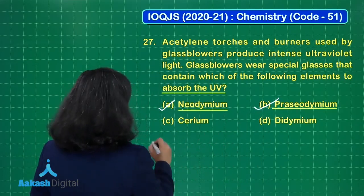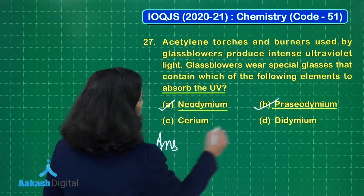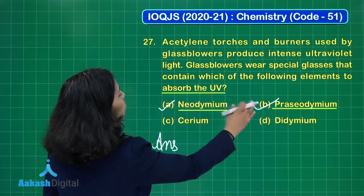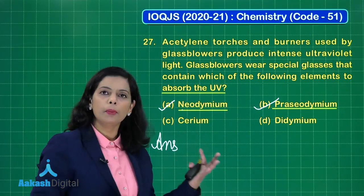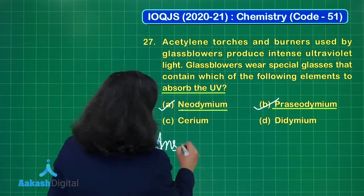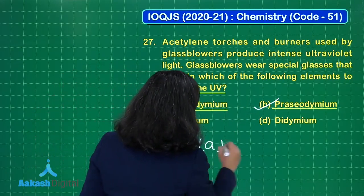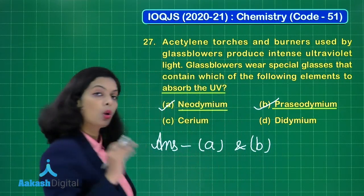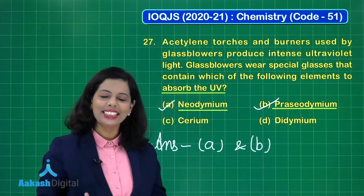C is not the correct one. While if I talk about didymium, this is basically the mixture of these two, neodymium and praseodymium. So I am just writing here the correct answer. Both option A and B are the correct answers. Hope it is clear. Easy question it was.